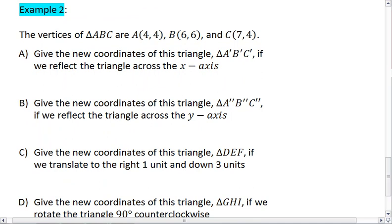You're given the vertices of triangle ABC, where A is at (4,4), B is at (6,6), and C is at (7,4).